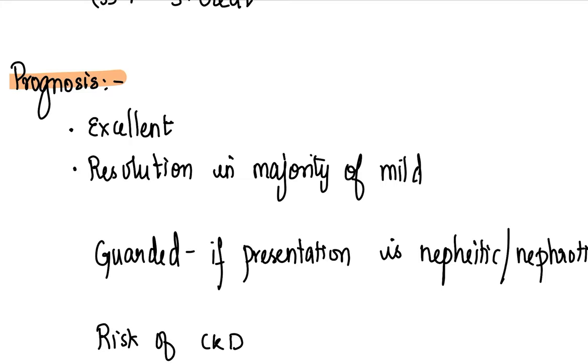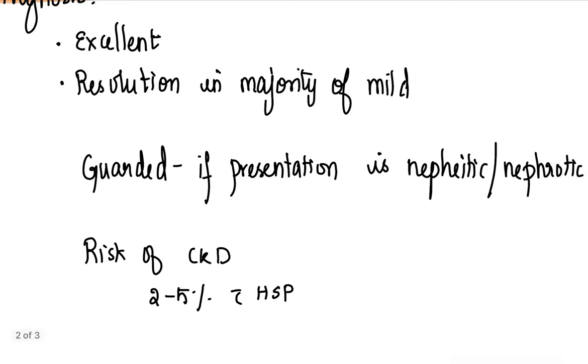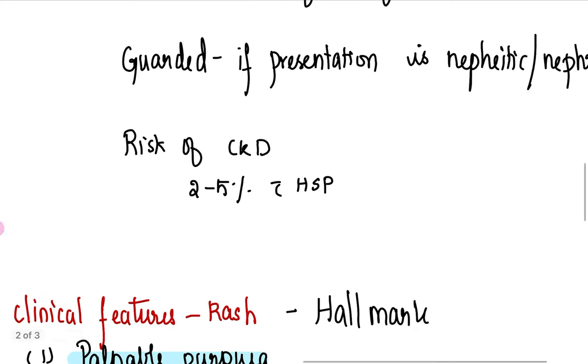What's the prognosis for a patient who has a renal involvement? It's usually excellent. They recover, they have complete resolution in majority of the mild cases. If the patient has severe presentation, a nephritic-nephrotic presentation, the prognosis is guarded. You need to follow up. There is a risk of CKD in two to five percent, less than five percent of HSP nephritis go on to have a chronic renal disease. This is about renal involvement in Henoch-Schonlein purpura.